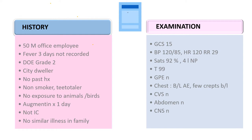This kind of history should be taken for all patients, as it gives clues to the etiology. On examination, GCS is 15 and all vitals are stable except for a saturation of 92% requiring low-flow oxygen on nasal prongs, with a few bilateral crepitations.